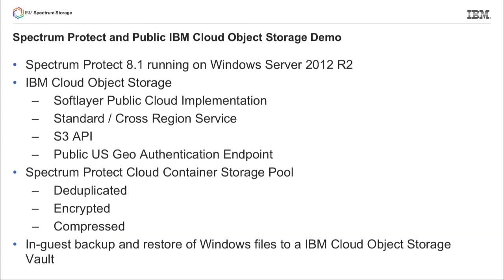For our demo, we're going to use a Softlayer public cloud implementation of IBM Cloud Object Storage using the Amazon S3 API, and we'll use a standard cross-region service as an example. This demonstration would be applicable no matter which service you chose — the difference would just be performance and potentially disaster recovery, or how well your data is protected against an outage.